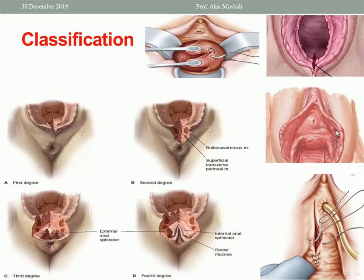This picture shows a labial tear. If it is superficial it may not need any suture; if it is deeper or the two ends are not close to each other, we can approximate by suture — either interrupted or continuous suture — using Vicryl 2-0 or 3-0. The next picture shows a periurethral tear: we place a catheter here to guide us not to injure the urethra, and we can suture using 2-0 or 3-0 Vicryl suture, continuous or interrupted.